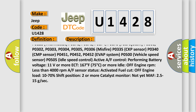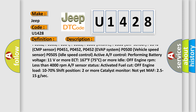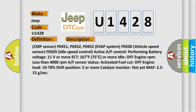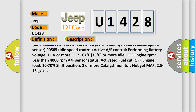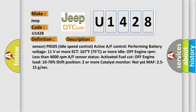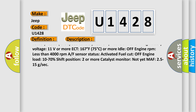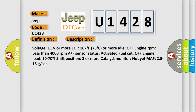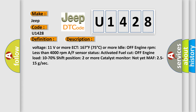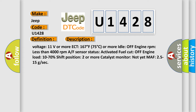P0302, P0303, P0304, P0305, P0306 Misfire; P0335 CKP Sensor; P0340 CMP Sensor; P0451, P0452 EVAP System; P0500 Vehicle Speed Sensor; P0505 Idle Speed Control. Active AF Control conditions: battery voltage 11 volts or more, ECT 167°F (75°C) or more, idle off, engine RPM less than 4000, AF sensor status activated, fuel cut off, engine load 10–70%, shift position 2 or more, catalyst monitor not yet active, MAF 25 to 15 g/sec.